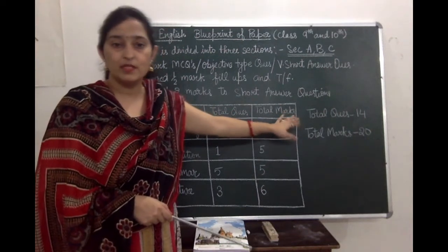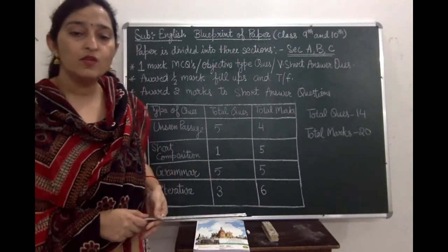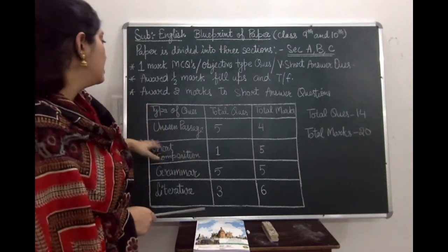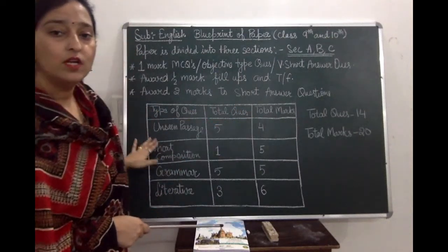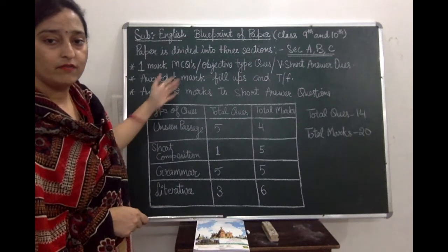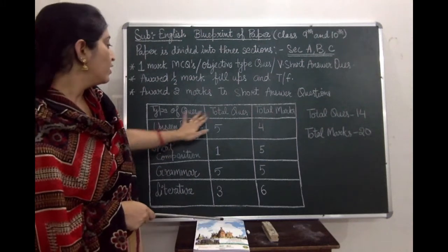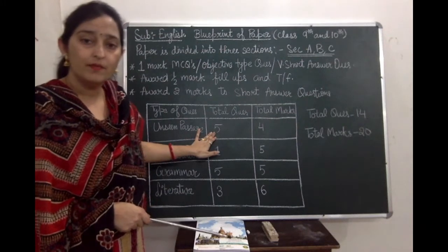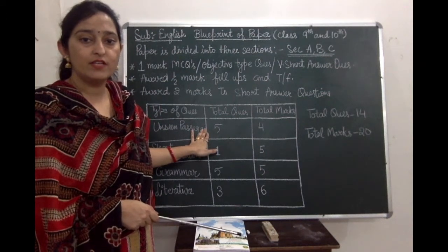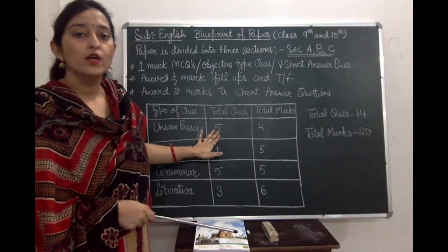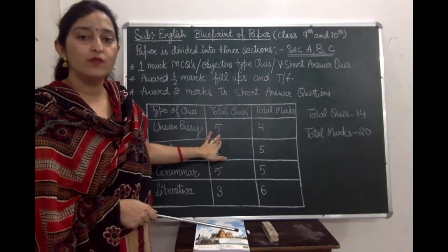The total questions in the English paper will be 14 and the paper is of 20 marks total. For the unseen passage (Section A), you will get five questions but only attempt any four — so total questions are five, marks are four, and one is optional.